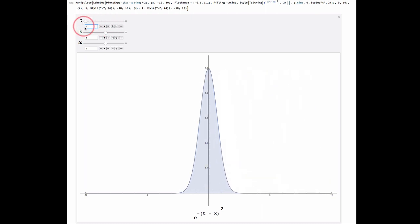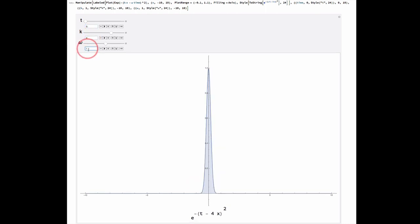Now, just as we did before, we can increase the size of k. And if we do that, we see that the Gaussian pulse becomes narrower. So we've decreased the wavelength, if you like, by increasing k.